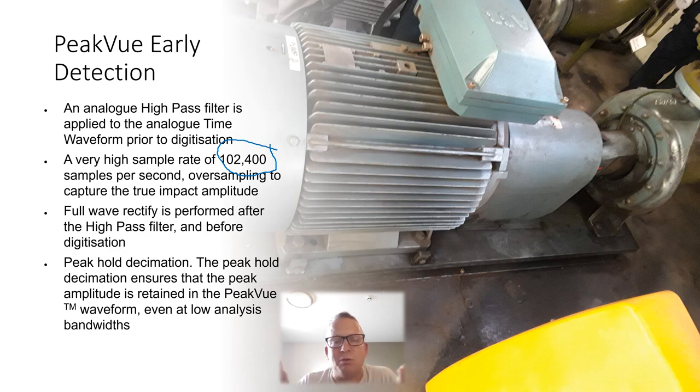Very short pulse, short duration, really high frequency. They're sampling really fast to capture it. Then they rectify it, digitize it, peak hold decimation, which by the name PeakVue comes from, where it holds a peak value and ensures the peak value is retained and it gives you some really crisp, clear data.